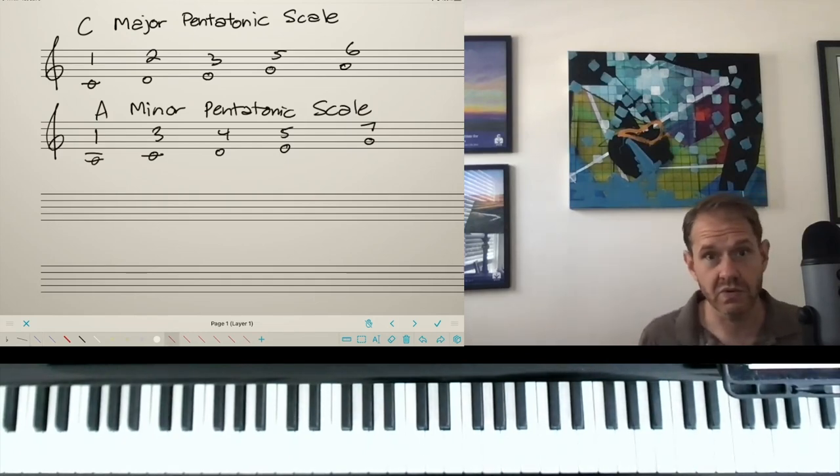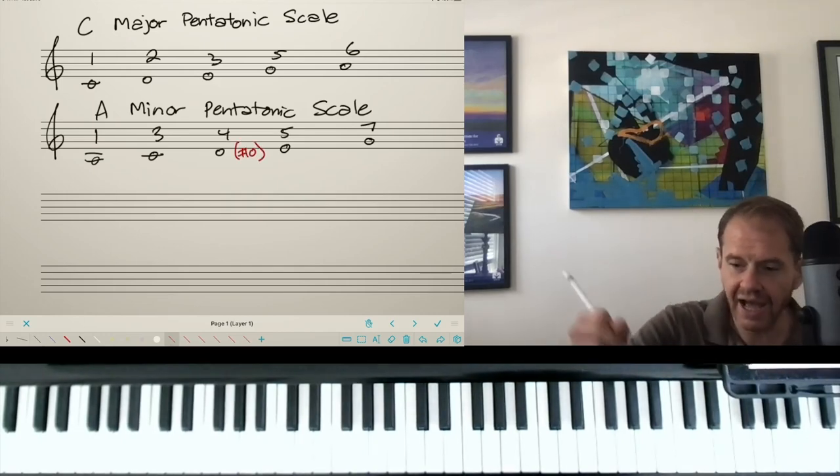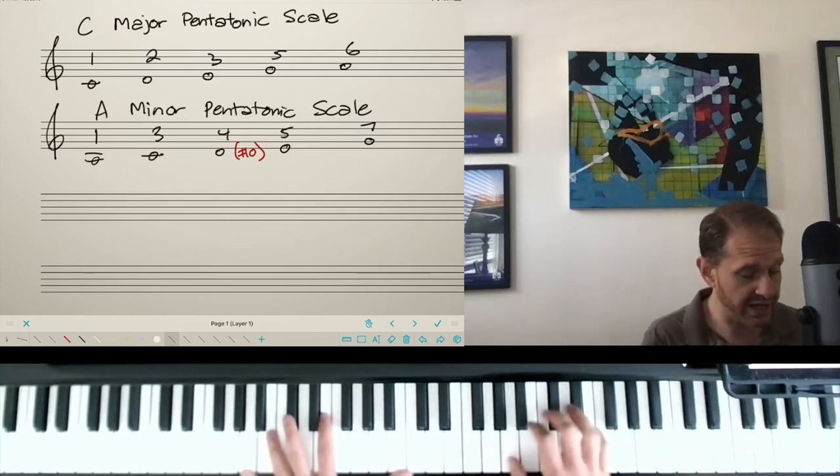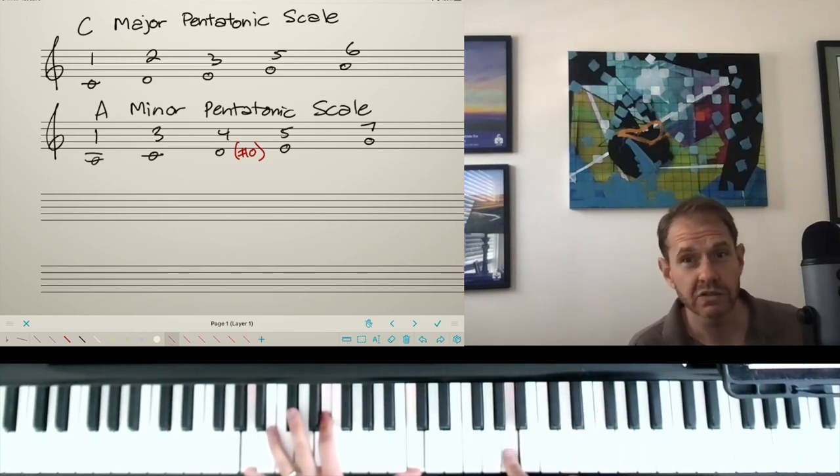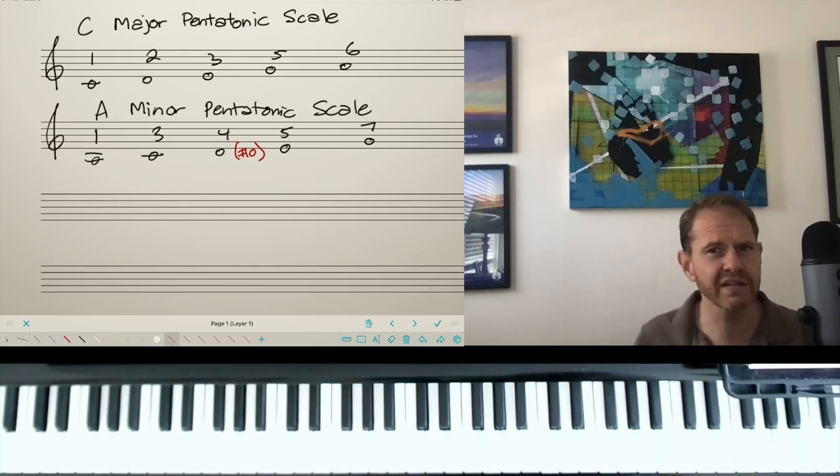But among the many reasons why the pentatonic scale is important is that if we add in a note between the fourth and the fifth of that minor pentatonic scale, we get the blues scale. So when people ask me why the blues scale works, despite the fact that it's such an odd scale, one of the reasons that I give is that it's basically the pentatonic scale.